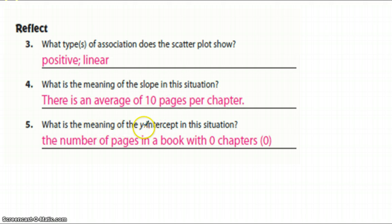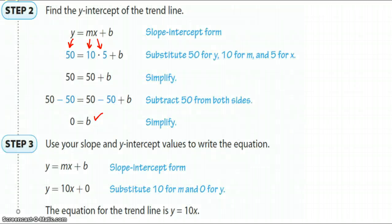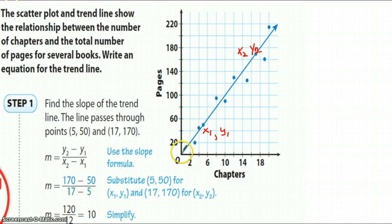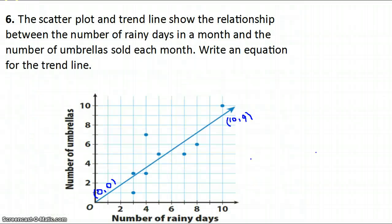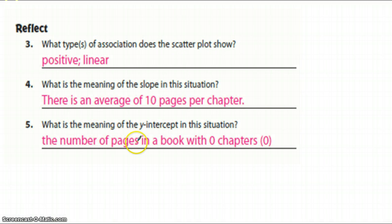What is the meaning of the slope in this situation? So we said that the slope was 10. So if we go back and look at the graph, if the slope is 10, then we're talking about the number of pages compared to chapters. So what does the slope say? There's an average of 10 pages per chapter. I went at y to x. Then it says, what is the meaning of the y-intercept? Well, according to what I see, the y-intercept is zero. So apparently, no pages, no chapters. Okay, let's see what it says. The number of pages in a book with zero chapters is zero. Right? No pages, no chapters.